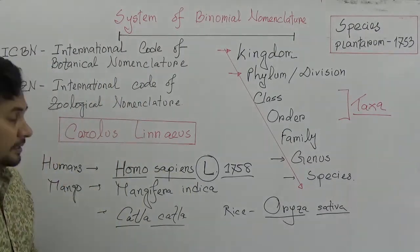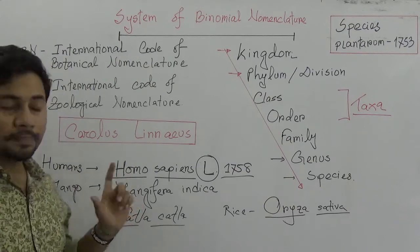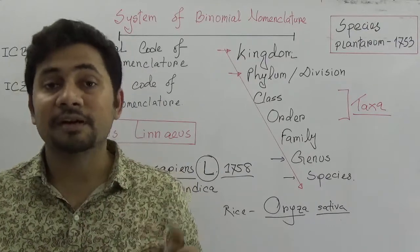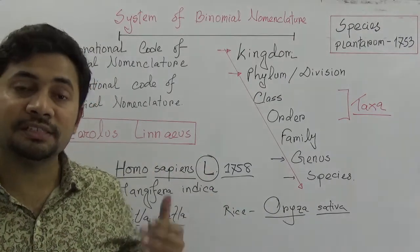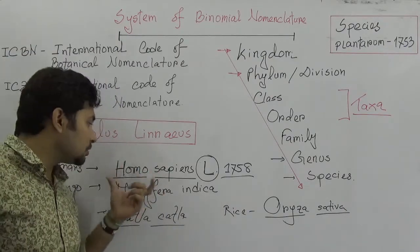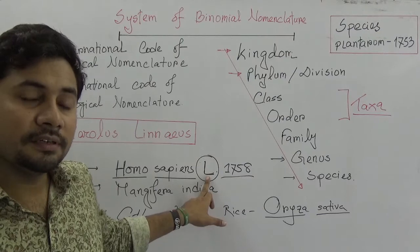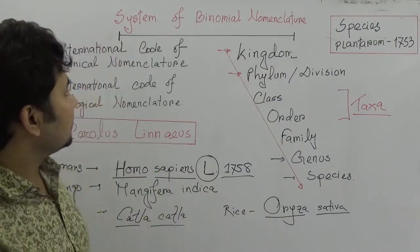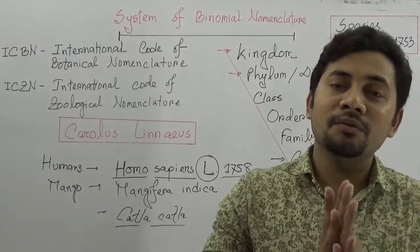In summary, the principles of binomial nomenclature are: first, it is a Latin word; second, there are two distinguished parts — genus and species; the two parts must be separately underlined; and the scientist who invented the name should be mentioned after the binomial nomenclature with the year of invention.